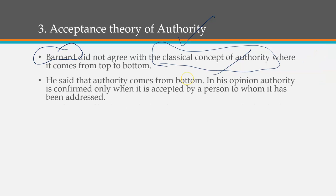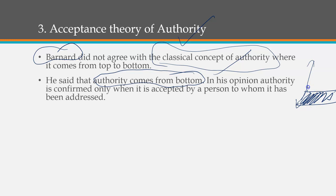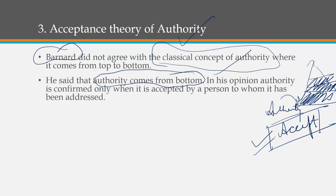Bernard argued that authority always moves from bottom upward. The reason is: if the people over whom you exercise authority do not accept it, your authority holds no value and doesn't exist. For your authority to work, people must first accept it. When they accept that yes, this person is authorized and I need to follow their instructions — only then does authority come to you.